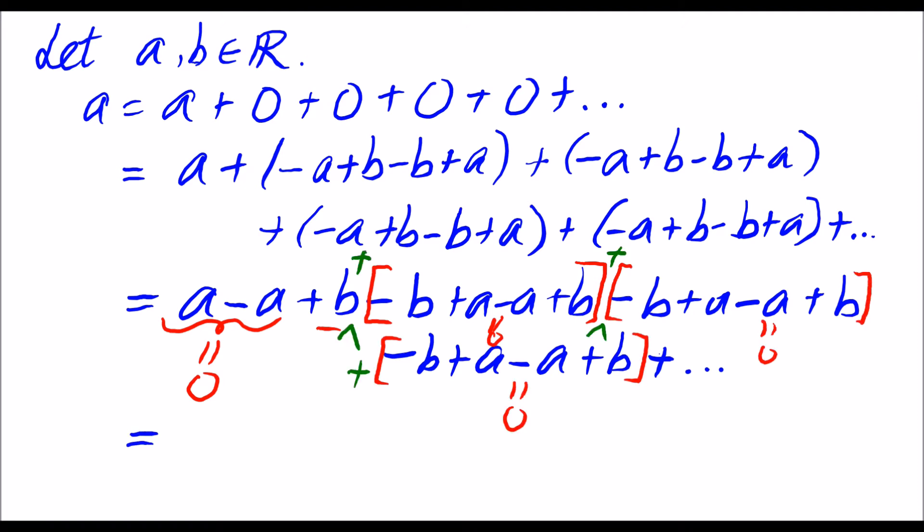This means that it is equal to zero plus b plus zero plus infinity of zeros. Hence a is equal to b.